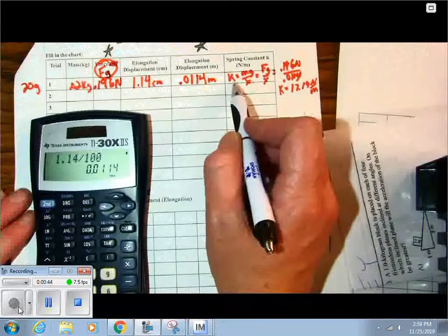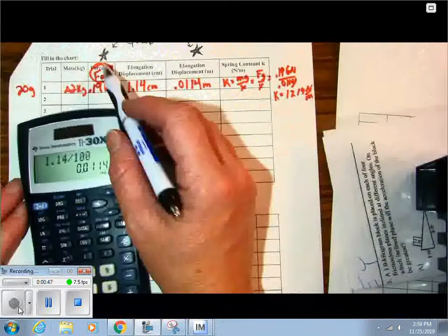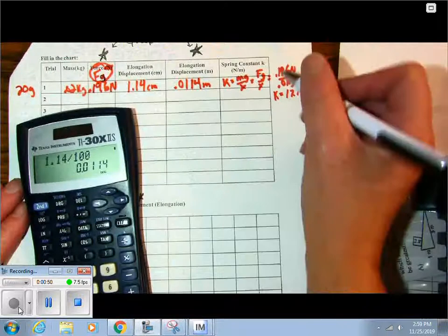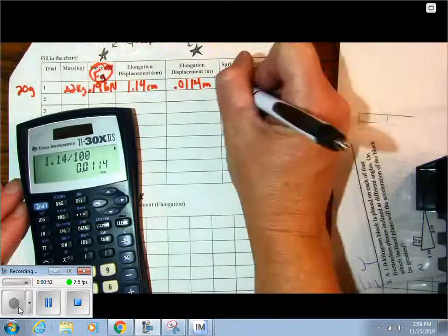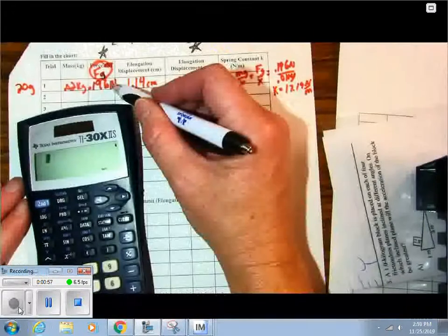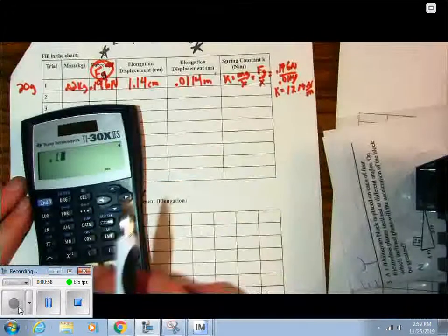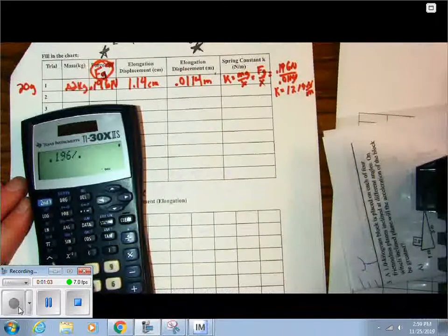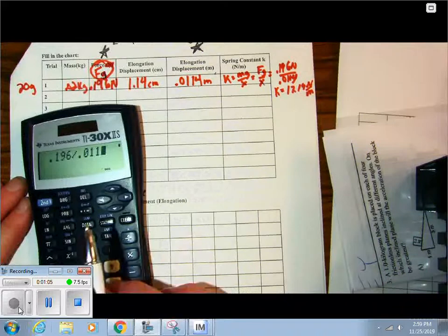Now to find my K, I took the FG, which is right there, 196, and I divided it by the displacement, which is this number. So I took this number, 0.196, and I divided it by that number, 0.0114.